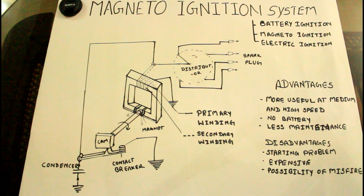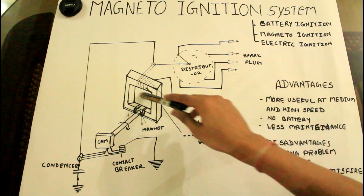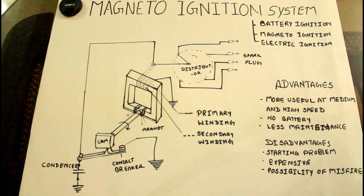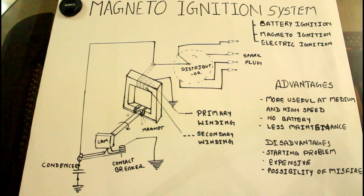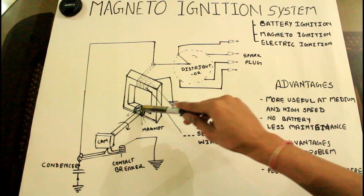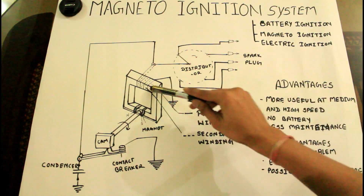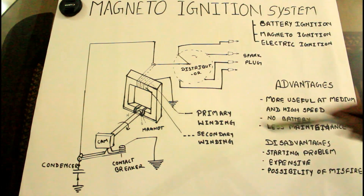Both the battery and the magneto ignition systems are similar — the only difference between them is the power generation unit. In the magneto ignition system, we use the magneto as the power generation unit instead of a battery. The magneto ignition system has some important components: the magneto, distributor, spark plug, and condenser. The magneto itself consists of a magnet, armature, primary winding, and secondary winding.